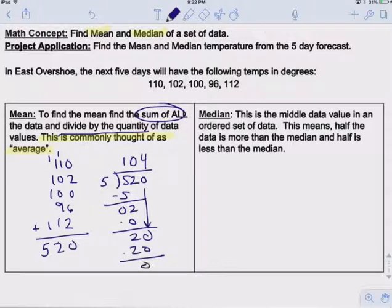So we take the 520 and divide it by 5. So our mean temperature is equal to 104 degrees. Okay, so for the next five days, the average temperature will be about 104 degrees. That is considered the mean.